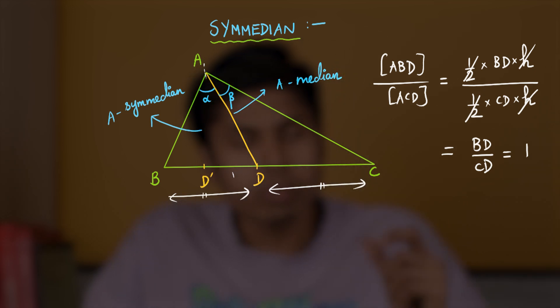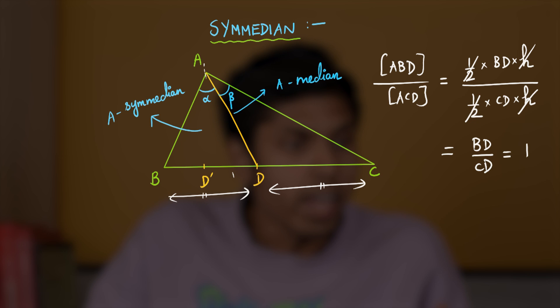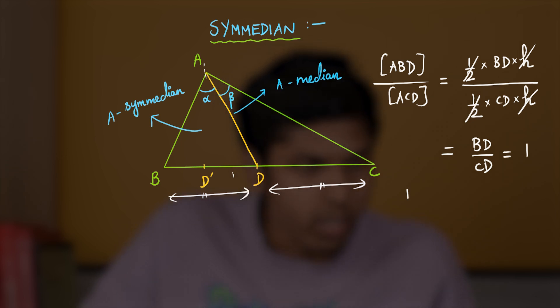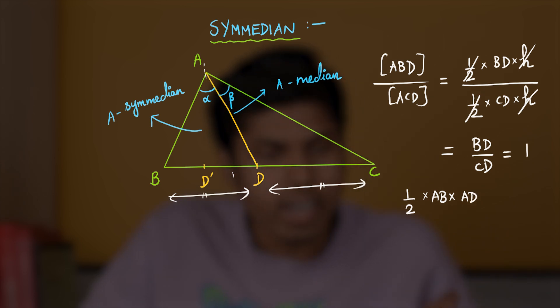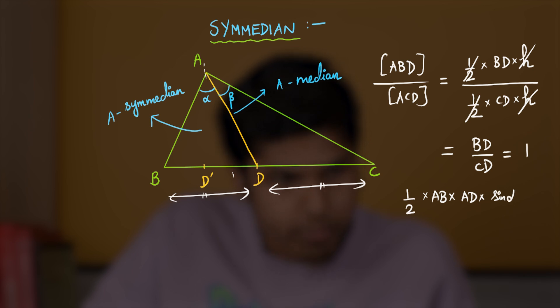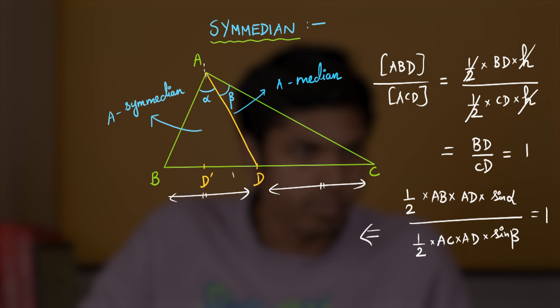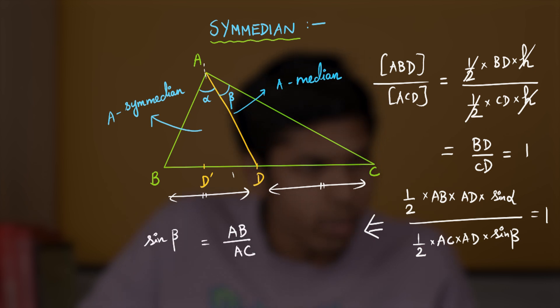But, we may express the area of ABD in a different way: half into product of two sides, AB and AD, times the sine of angle subtended between them, that is sine alpha, divided by half AC into AD times sine beta.